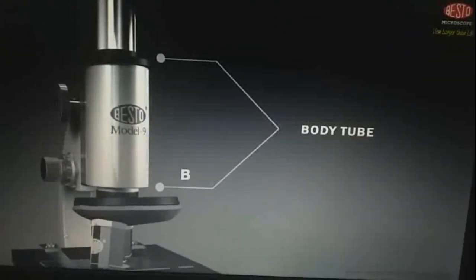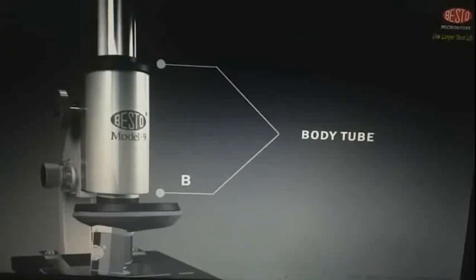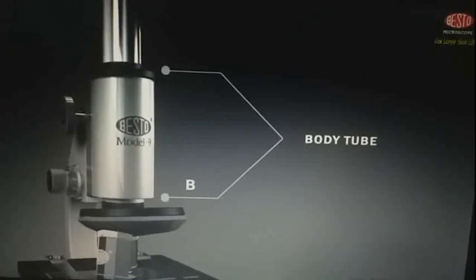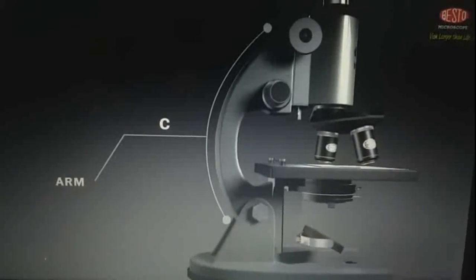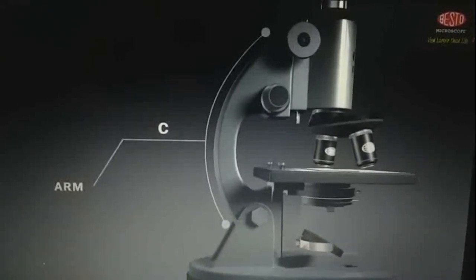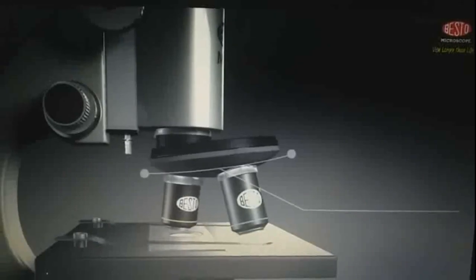B, body tube. It holds eyepiece in position over the revolving nose piece and the objectives. C, arm. It is curved metal piece that holds the body tube in place over the stage and the base.